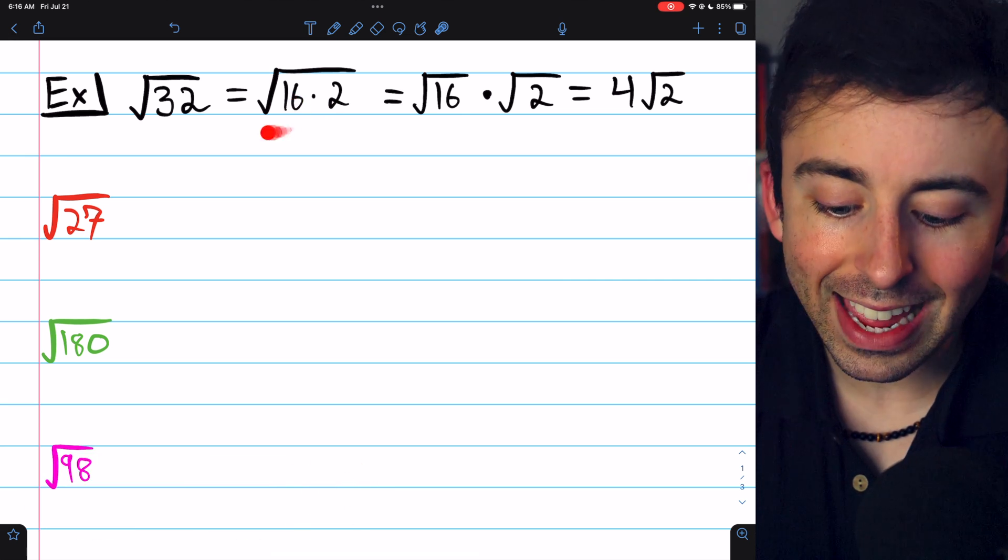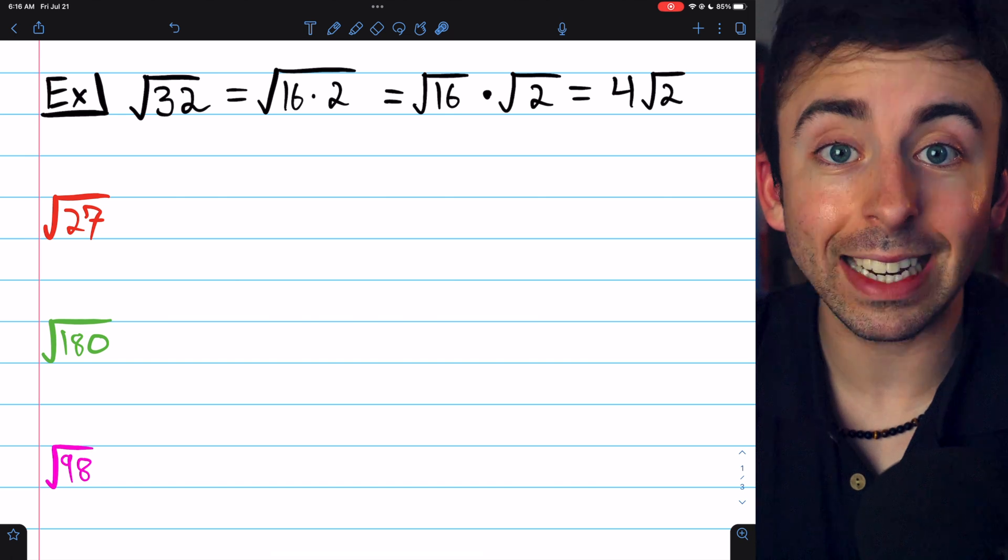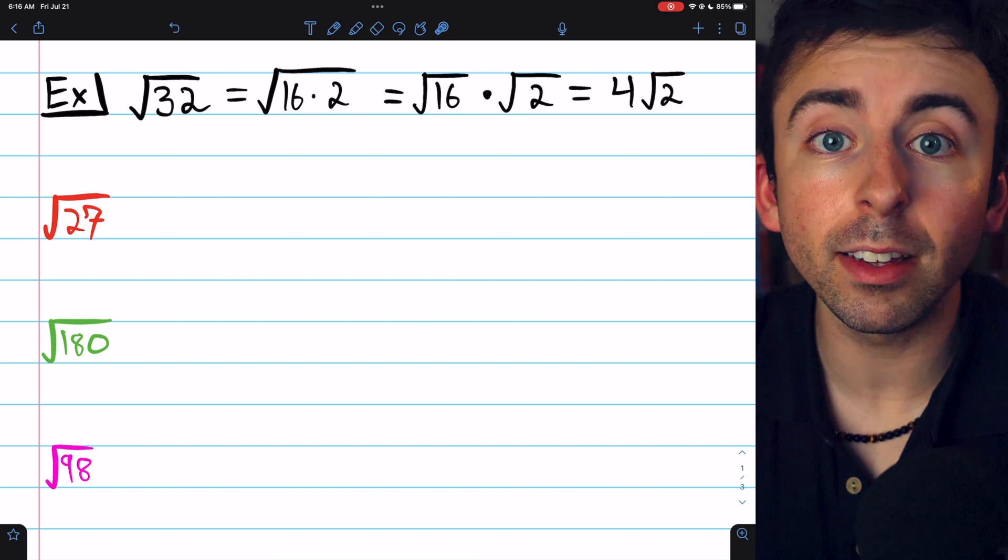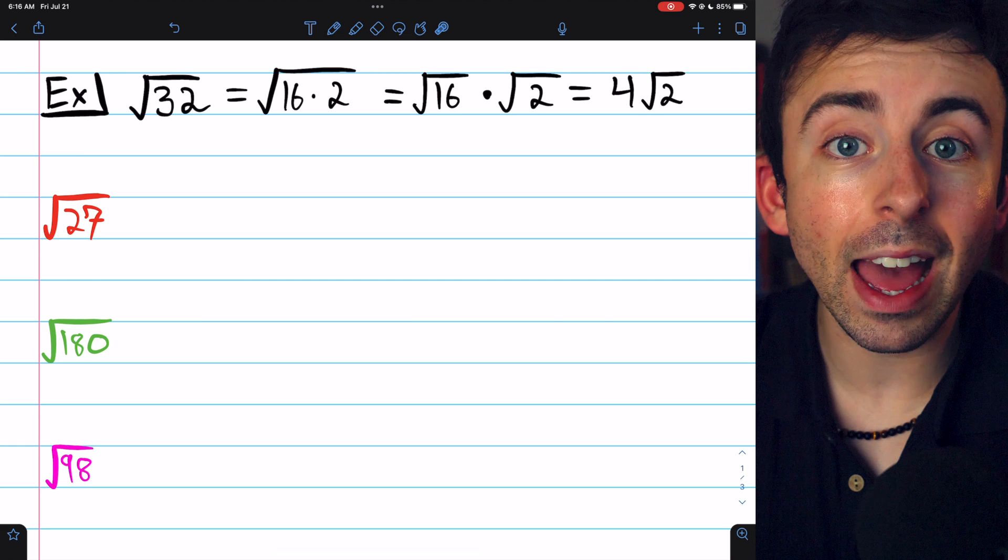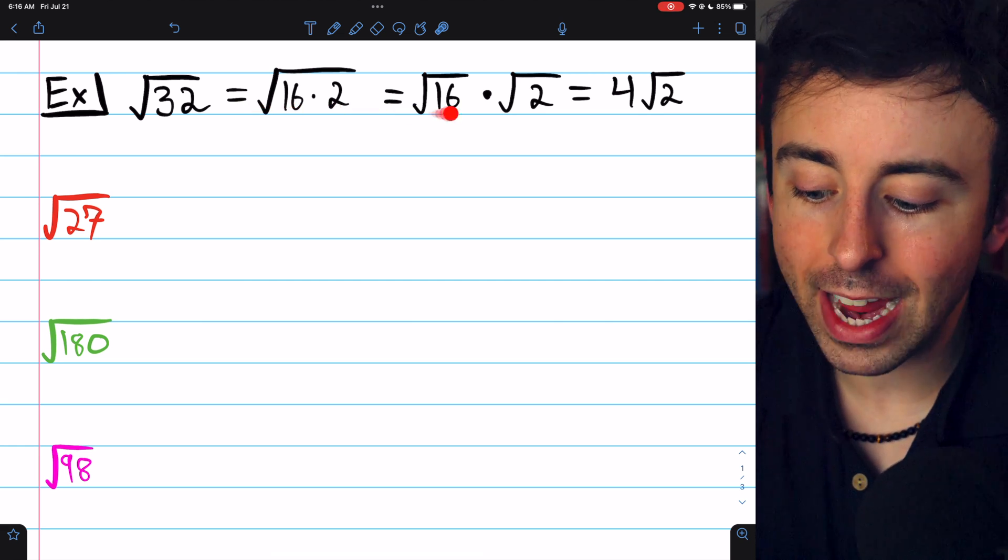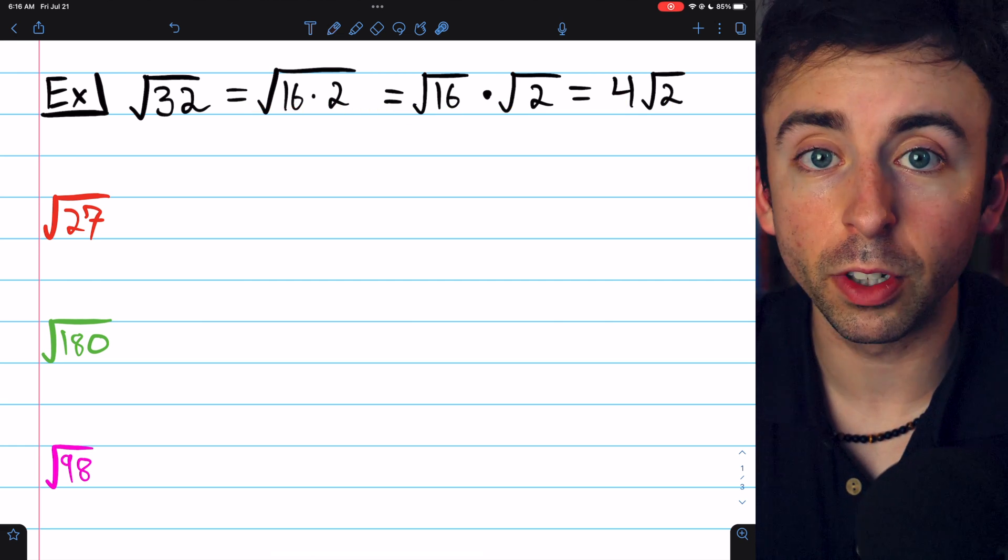Thus, we can take it out of the square root by taking its square root. If we take the square root of 16, we get 4, and so what remains is 4 times the square root of 2.